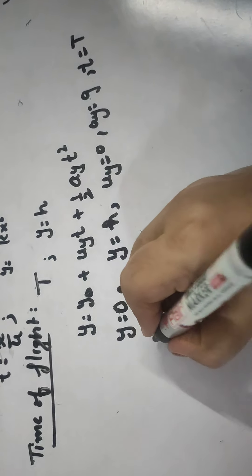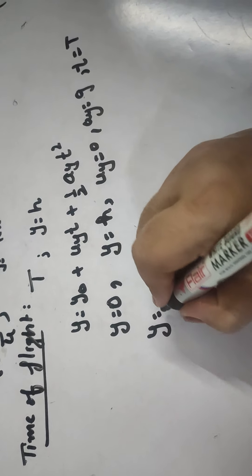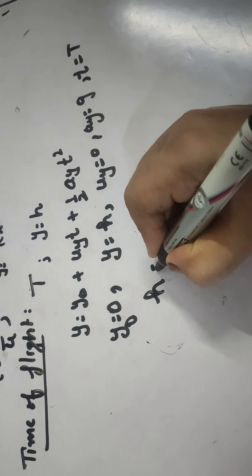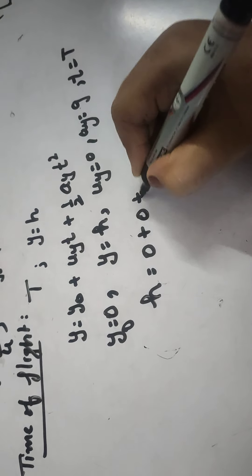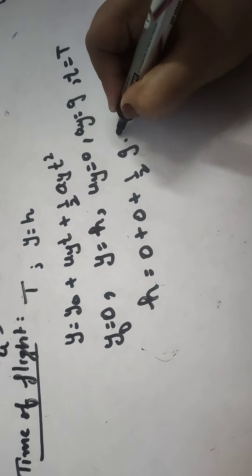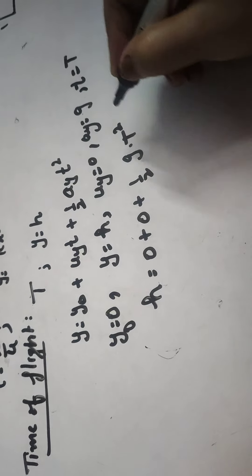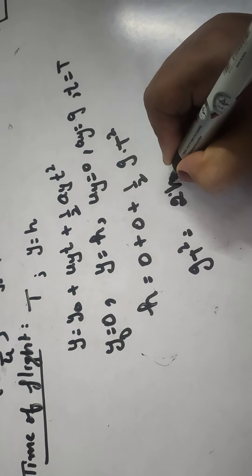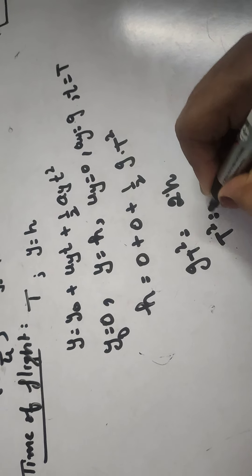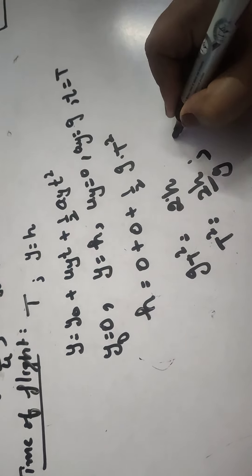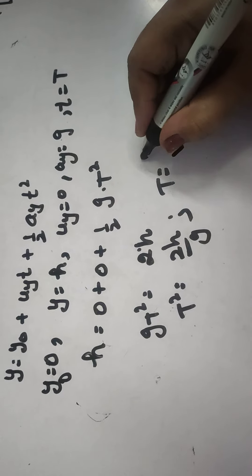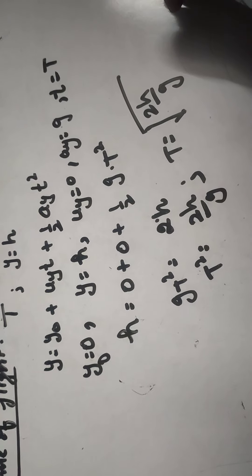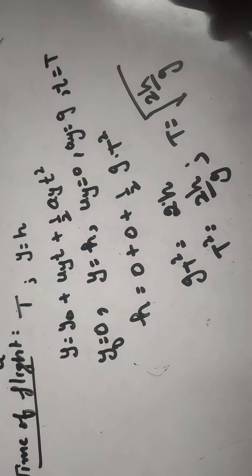Putting all these values into the equation: H = 0 + 0 + ½·G·T². From that, GT² = 2H, or T² = 2H/G, giving us T = √(2H/G). This is the time of flight — the time taken by the projectile when it is given horizontal projection.